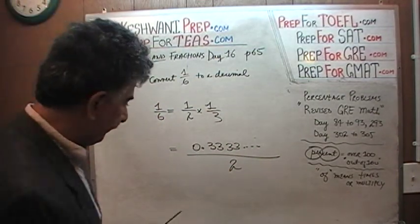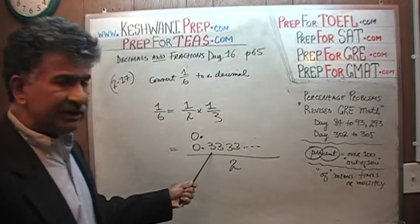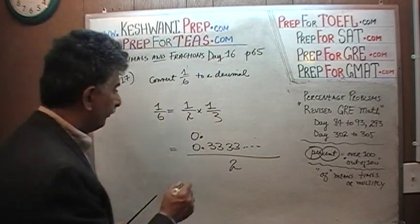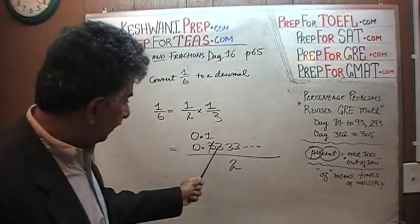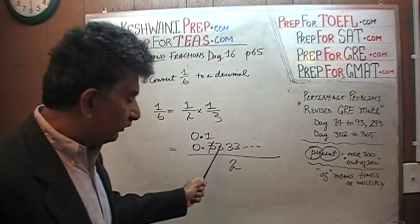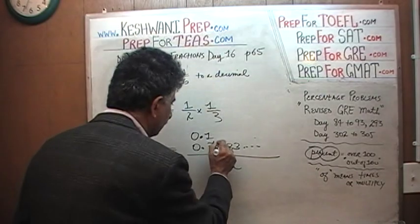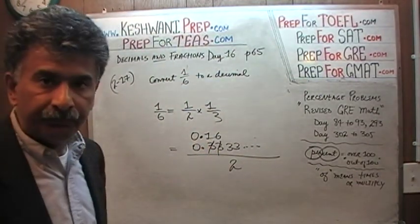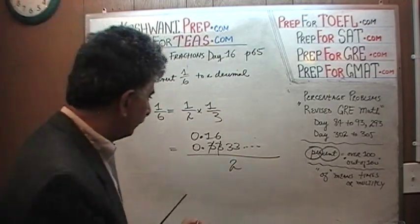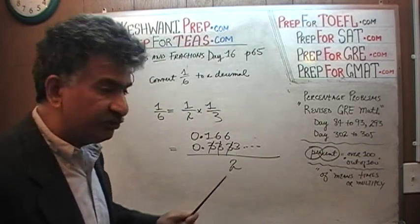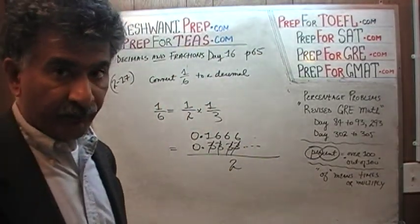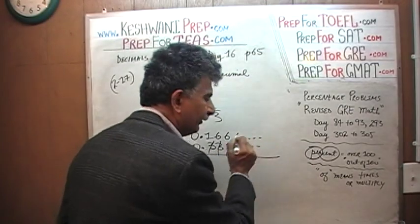How do we divide 0.3333... by 2? We have a 0 and a decimal. How many 2s in 3? 3 has only one 2. The remaining 1 joins the next 3 and becomes 13. How many 2s in 13? 13 has six 2s. The remaining 1 again joins the next 3 and becomes 13 — six 2s again. This pattern repeats forever. It's just going to go on forever and never end.